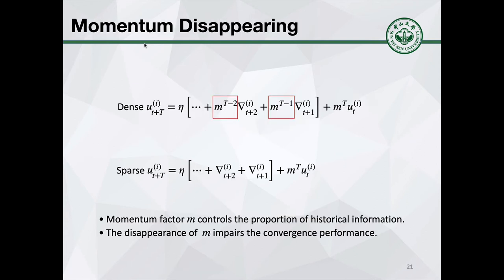Comparing the dense update, we found that momentum factor M disappears in the sparse updates. In momentum SGD, we use M to control the proportion of historical information. So the disappearance of M leads to an imbalance between new and old information, and also to a decrease in accuracy.